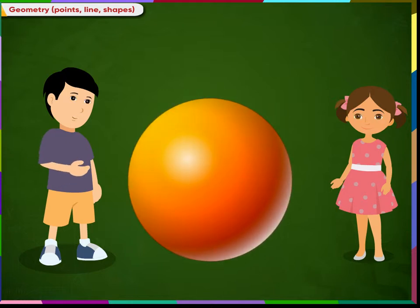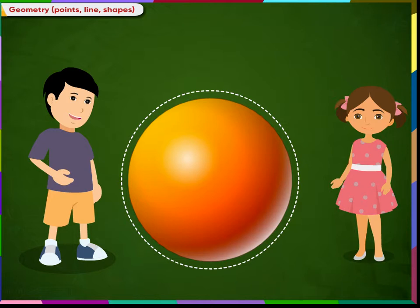This is a sphere. A sphere looks just like a globe. A sphere has one curved surface and no corner and no edges.